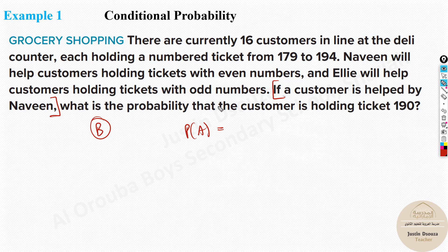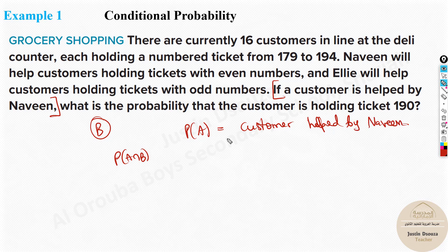Since we are asked to find the probability that the customer is holding ticket 190, that is our event B. The statement 'a customer is helped by Naveen' is event A — the given condition. So A ∩ B means the customer must be helped by Naveen and must be holding ticket 190.